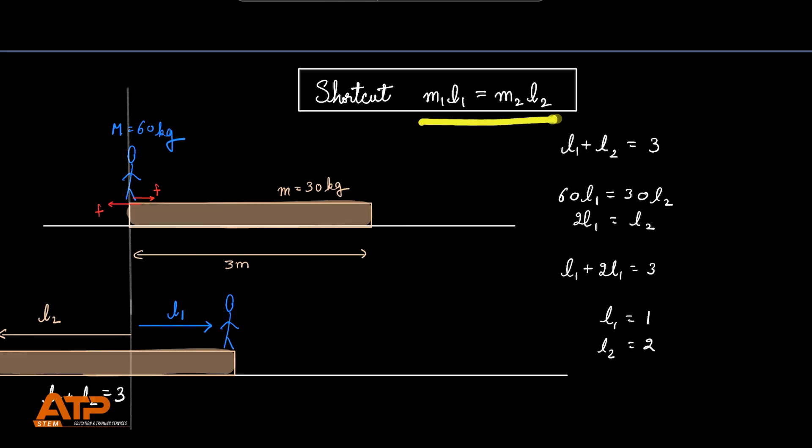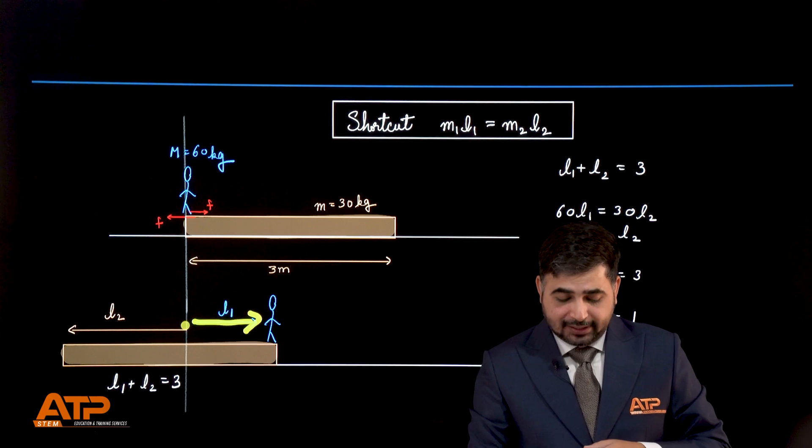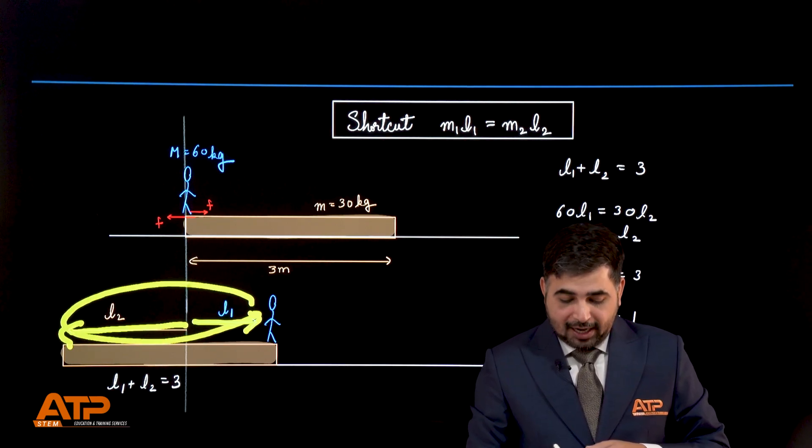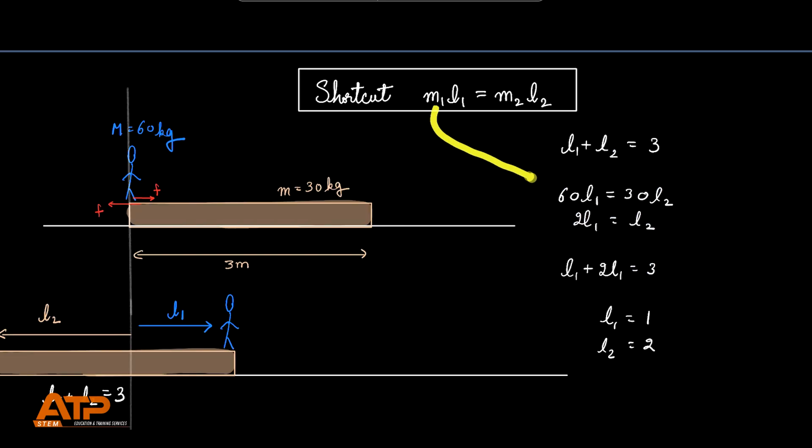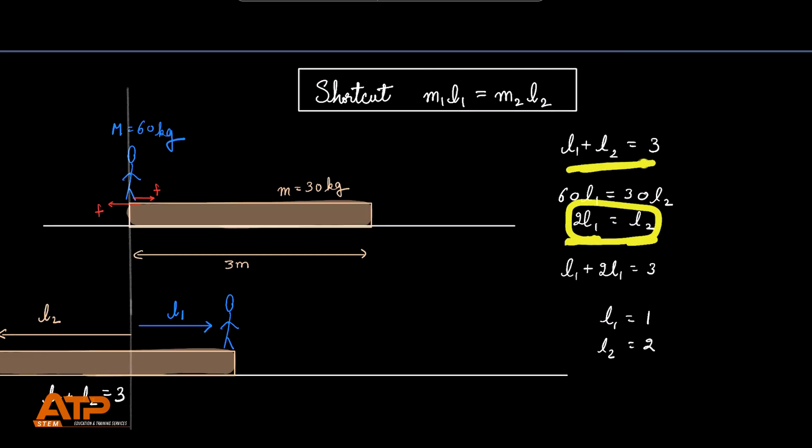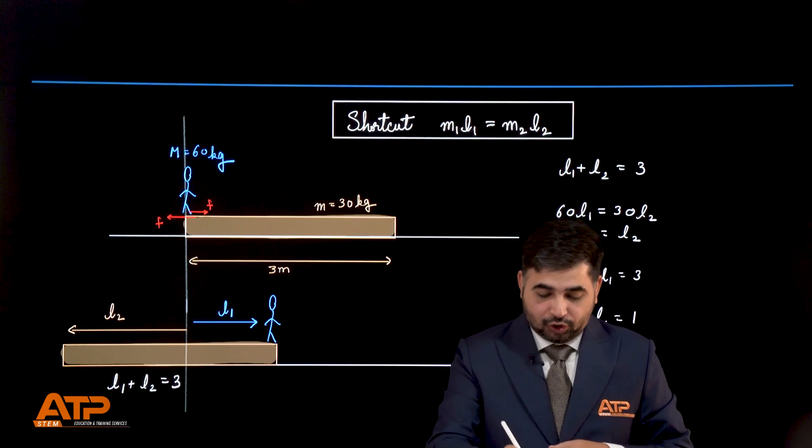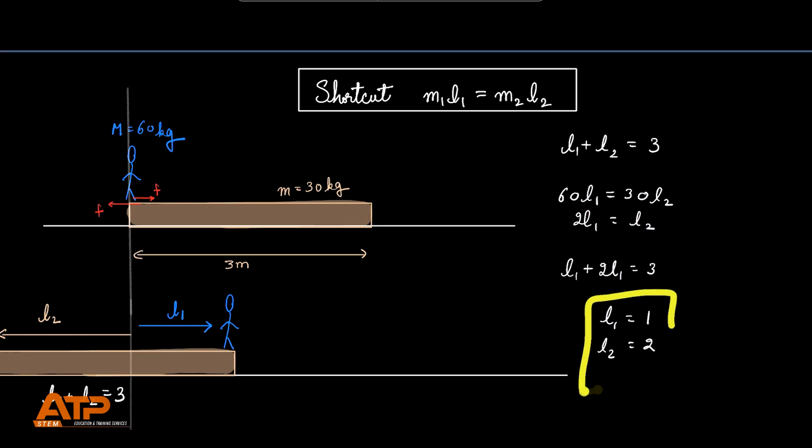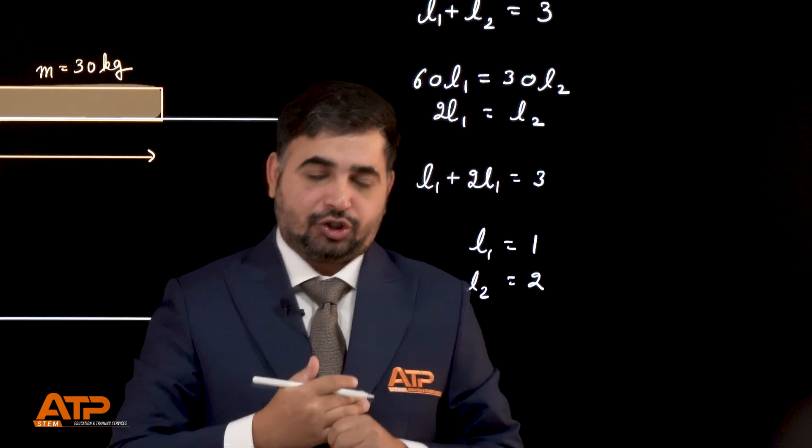So, this is going to be true. And we also know that L1 is the distance moved by the person, L2 is the distance moved by the plank and their total has to be 3. So, here, M1 is 60 and M2 is 30, which gives us that L2 is going to be twice of L1 and their total is going to be equal to 3. So, L1 must be 1 and L2 must be 2. That is how we get L1 and L2 both very quickly without going through that lengthy calculation.